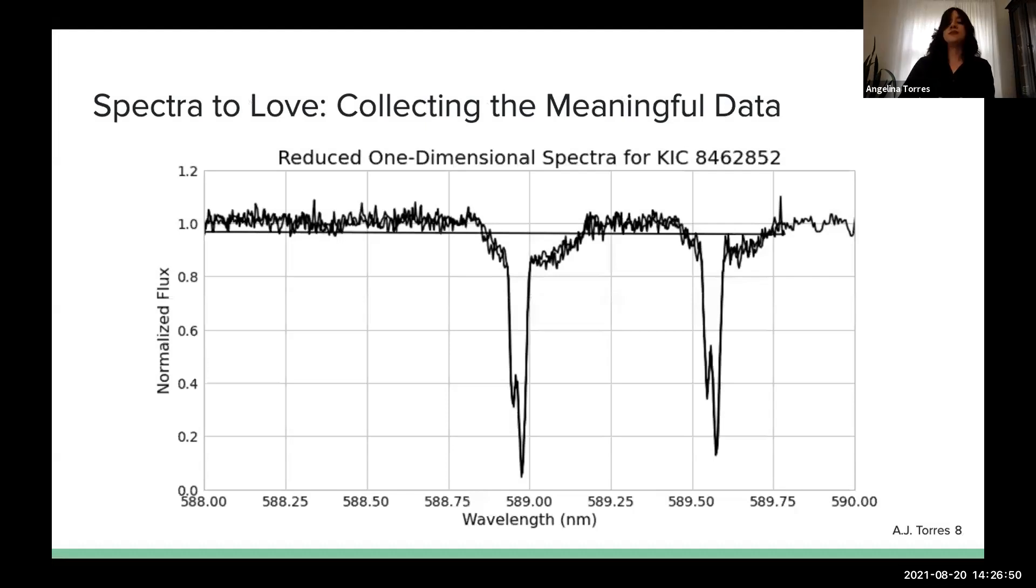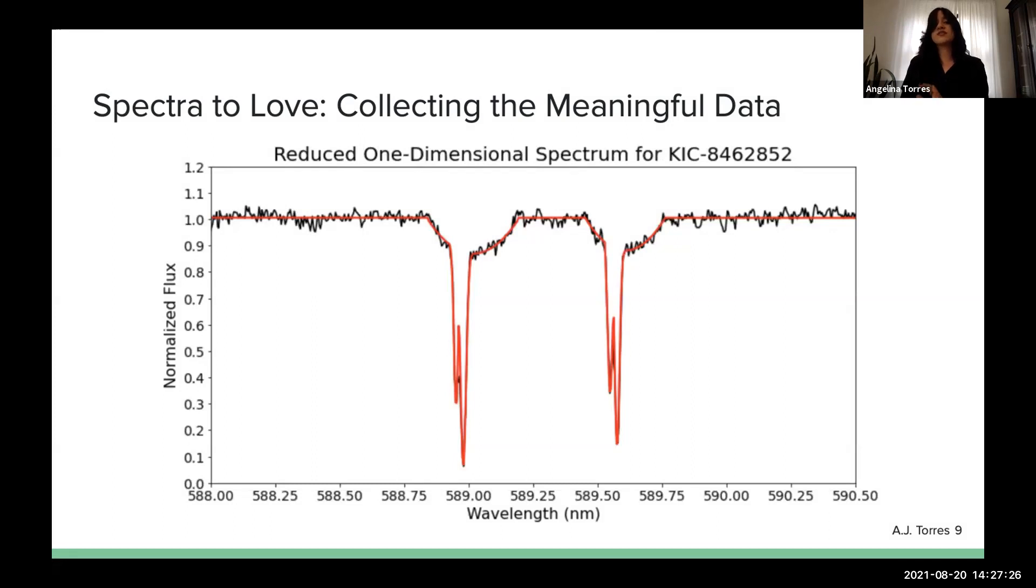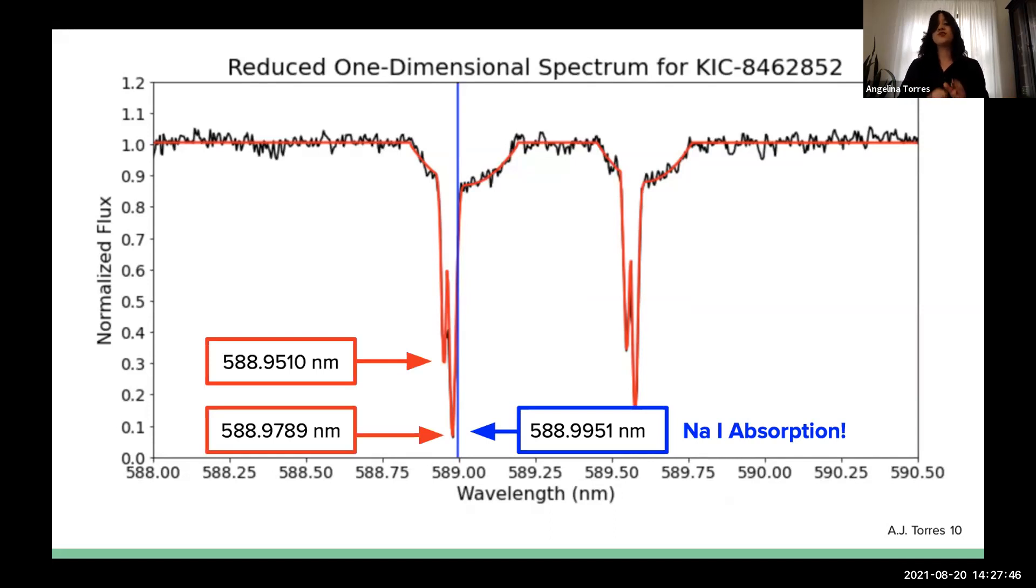That looks a little bit like this. This is a one-dimensional spectrum for Tabby's star. And note, we want to be looking for sodium-1 absorption features. Those are in wavelengths 588 to 590 nanometers. And we're seeing those. We have two key absorption features here on this plot. And each of them has a characteristic blue shift, double peak, on these features. Now, we can clean this graph up a little bit by focusing more on the pixels that are closer to the absorption features we want to be observing. We can also create a model, which will capture those characteristic peaks. Now, if we look at this compared to the known rest wavelength of sodium-1 in this blue line, we can note that the red peaks are slightly to the left of this known rest wavelength.